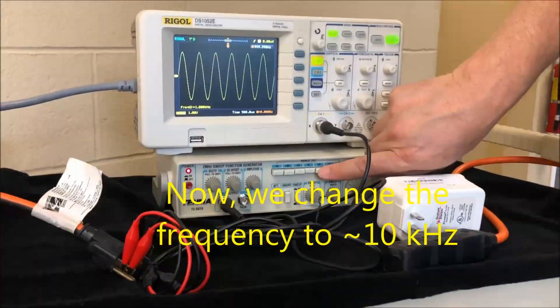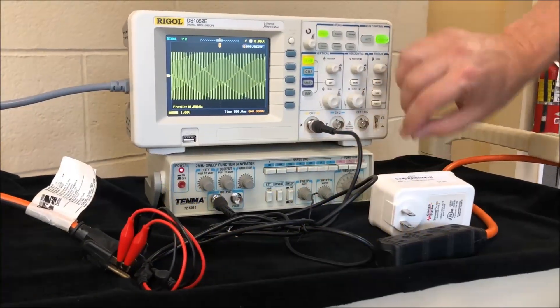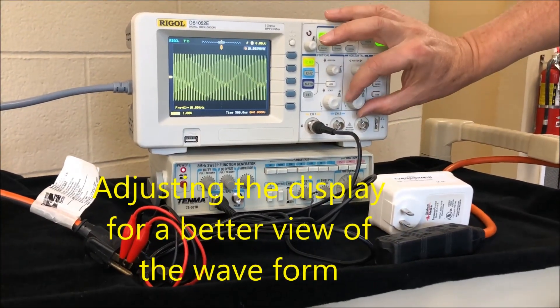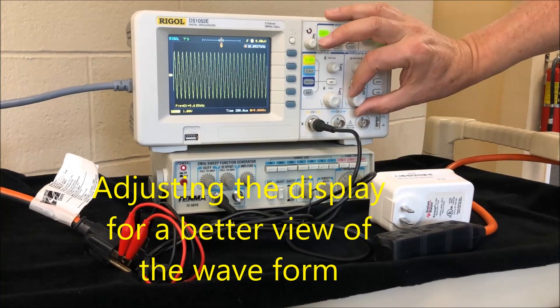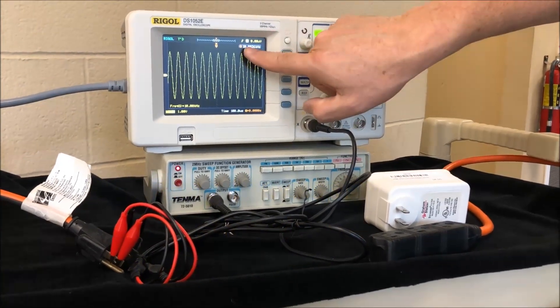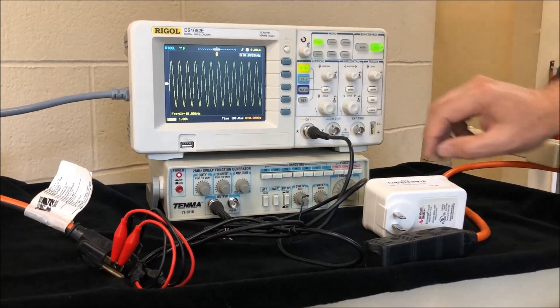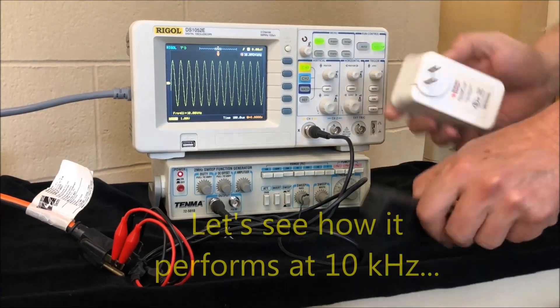So now we're changing it to 10 kilohertz. We're just going to adjust the settings here so we can see the waveform better. And there it is. Now notice the height of the wave, 10 kilohertz, and we plug in the filter, and let's see what happens.